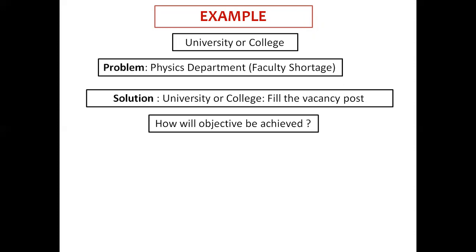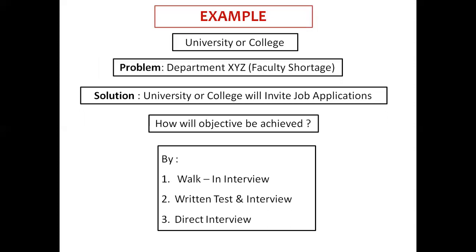But how will the university achieve this objective? Now the university will decide what kind of method of recruitment process they will implement. They might choose any of the following: either by walk-in interview, written test and interview, or direct interview. They will use one of the above methods in order to fulfill the objectives. Therefore, this is the method.